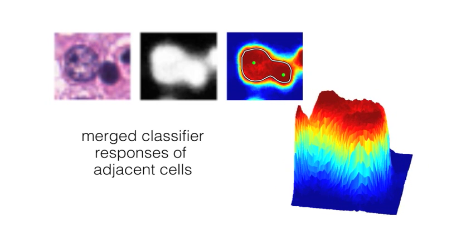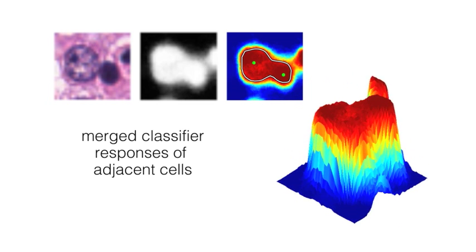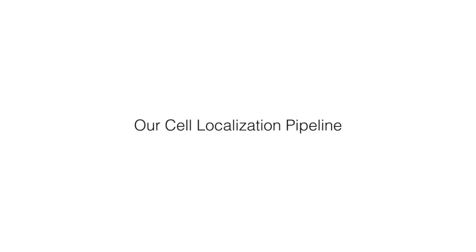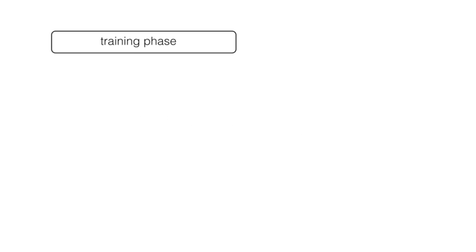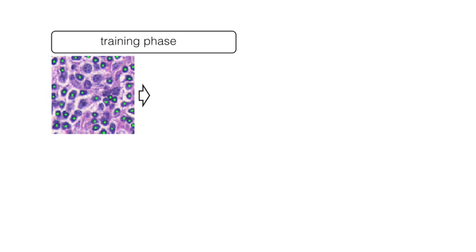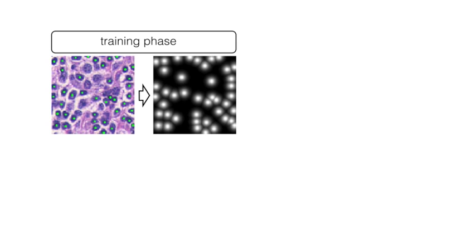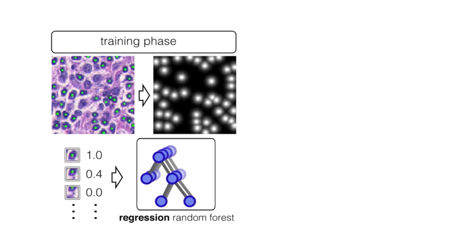In order to tackle these problems, we propose an alternative localization pipeline that consists of two phases. In the training phase, we compute a continuous proximity score map from the annotated cell centers. The training set consists of local image patches and the proximity score of the center. We use a regression random forest to learn the scores.